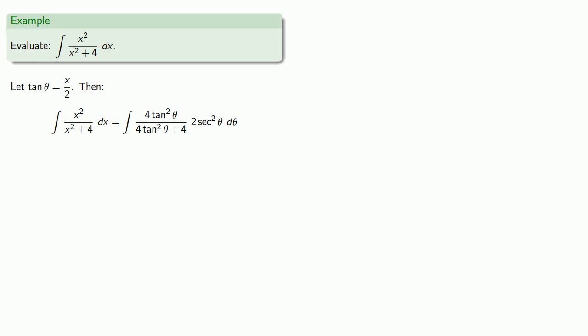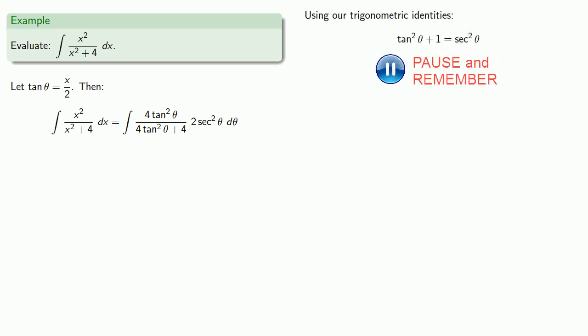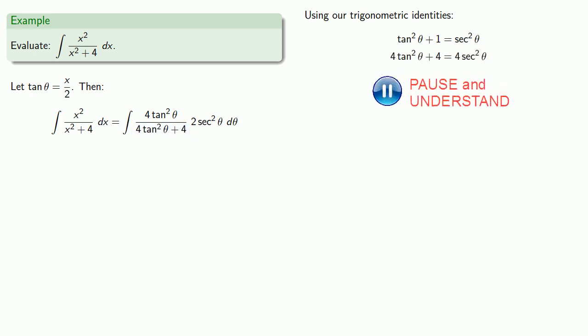This rather complicated expression can be simplified because we have basic trigonometric identities we can use. Because we have tangent and secant, we want to use the fundamental trigonometric identity that relates tangent and secant: tangent squared plus 1 equals secant squared. We don't have tangent squared plus 1; we have 4 tangent squared plus 4. That's okay — we can factor out a 4, and that allows us to simplify the integrand.